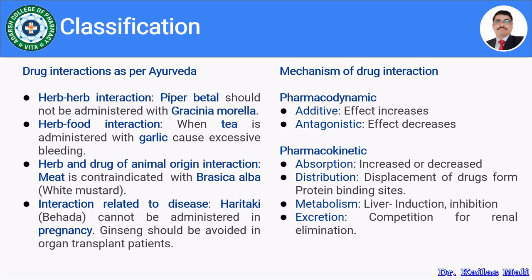According to Ayurveda, there are four types: herb-herb interaction, herb-food interaction, herb-drug interaction, and interaction related to disease. In herb-herb interaction, combining two herbs leads to an alteration in pharmacological effect or side effects — for example, Piper betle should not be administered with Garcinia morella. In herb-food interaction, one should not combine tea with garlic, as there might be chances of excessive bleeding, since garlic has the ability to produce a bleeding effect.